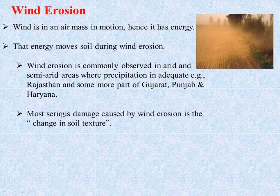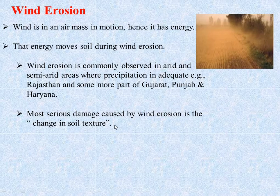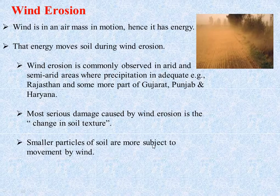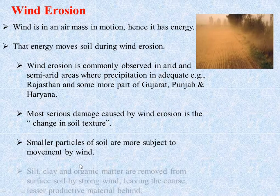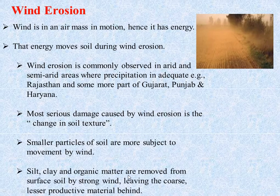One of the most serious damages caused by wind erosion is the change in soil texture. Smaller particles of soil are more subject to movement by wind. Silt, clay, and organic matter are removed from the surface and transported to other places.